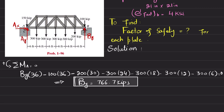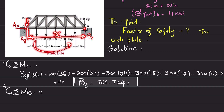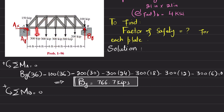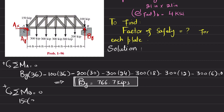To find Ay, we apply another equilibrium condition: sum of all moments about point B equals zero, taking counterclockwise as positive. About point B, the first moment is 150 with perpendicular distance 36, counterclockwise and positive. Ay with perpendicular distance 36 is clockwise.